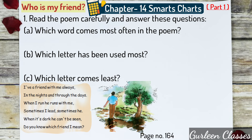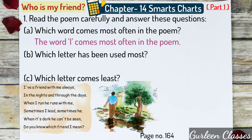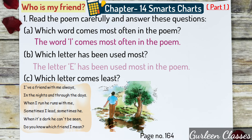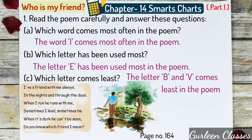Last topic for today — 'Who is My Friend?' Let us read together: 'I have a friend with me always, in the nights and through the days. When I run, he runs with me. Sometimes I lead, sometimes he. When it's dark, he can't be seen. Do you know which friend I mean?' Question 1: Which word comes most often in the poem? The word 'I' comes most often. Which letter has been used most? The letter E. Which letter comes least? The letters B and V come least in the poem.